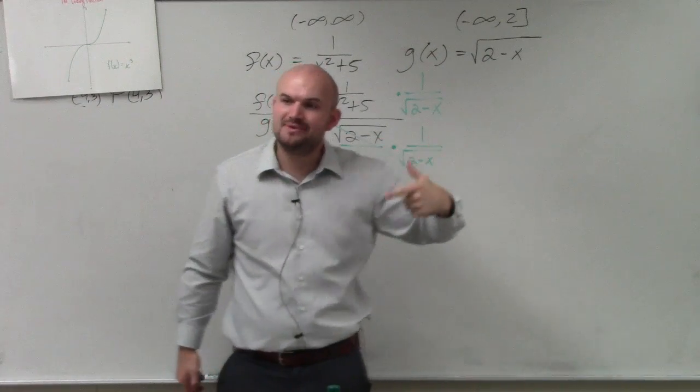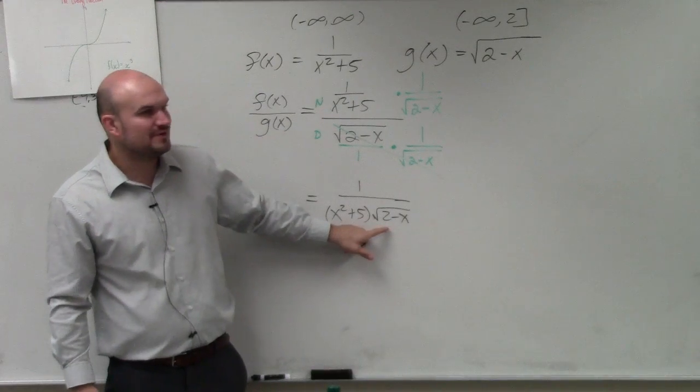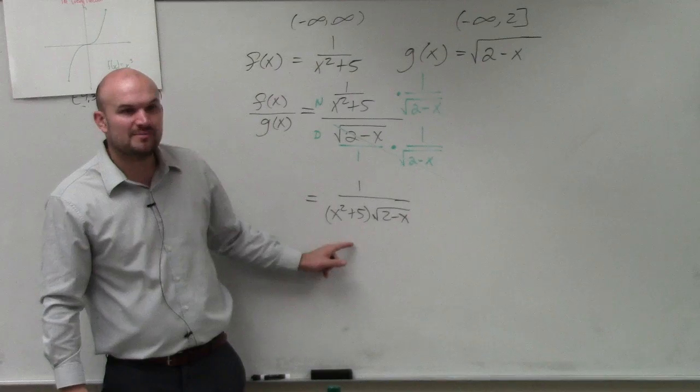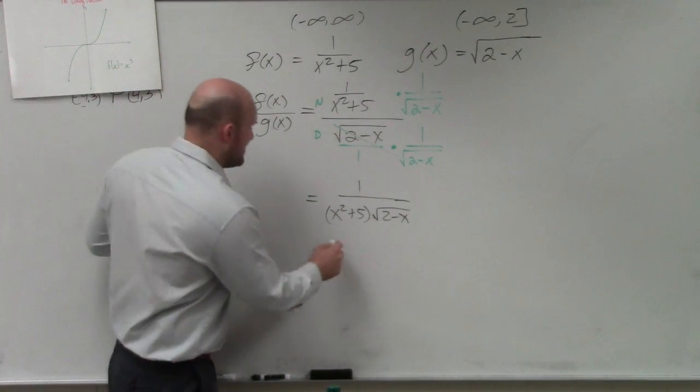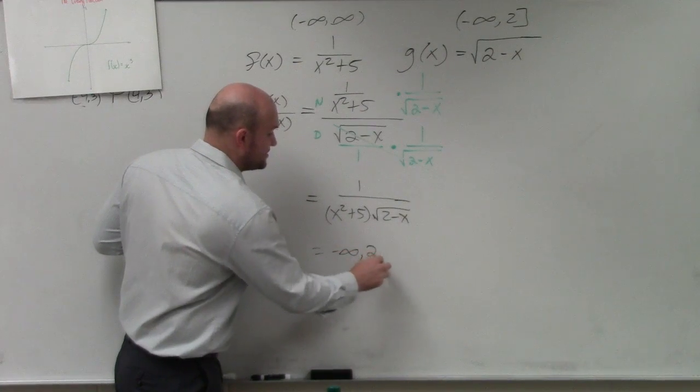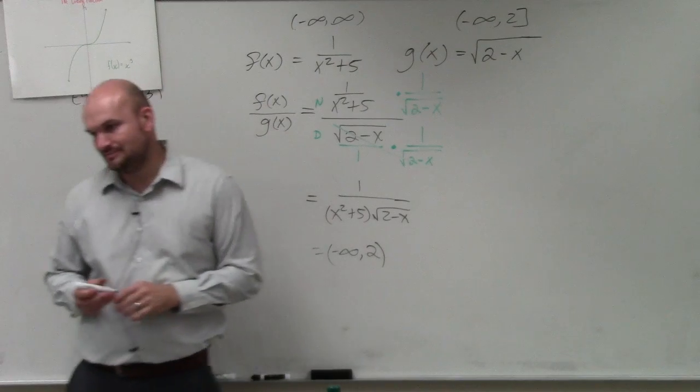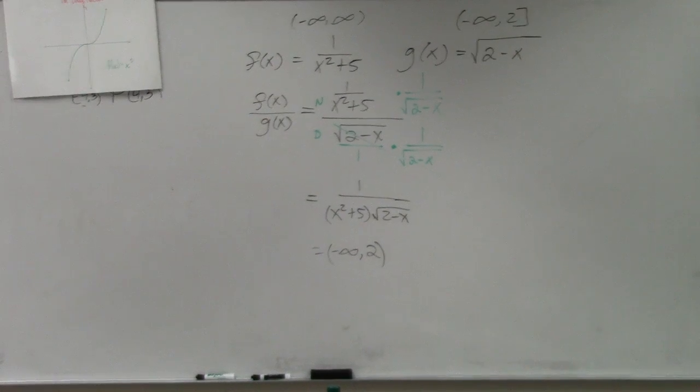But what happens now? Square root of 0 is 0. But what happens if we have 0 under the radical here? 0 times that is 0. Now we're dividing by 0. So 2 doesn't work anymore. So now, my domain is negative infinity to 2. But it's not included.